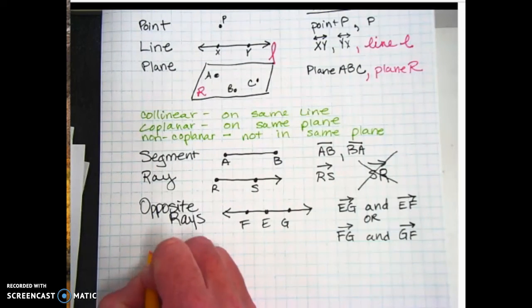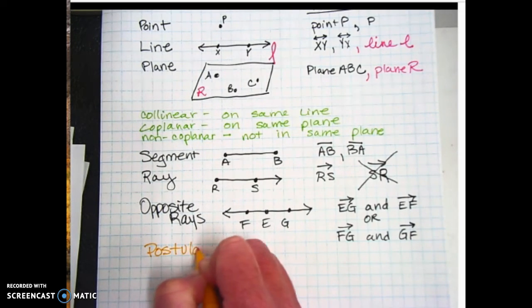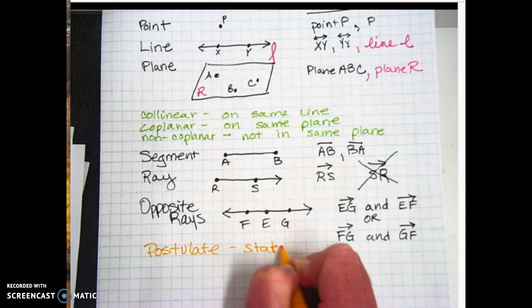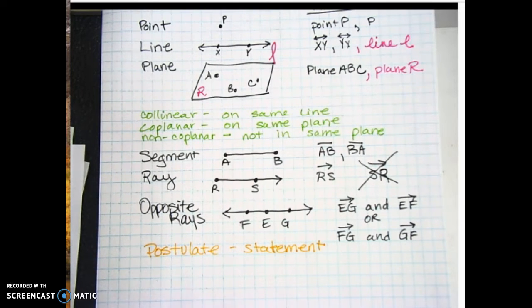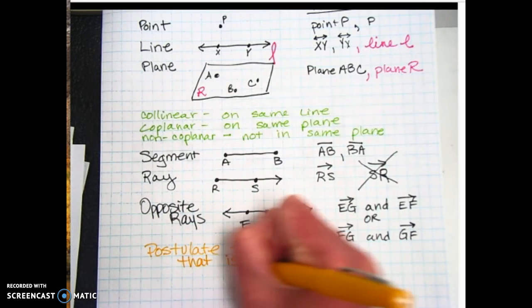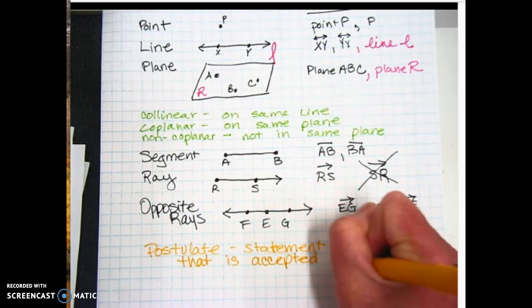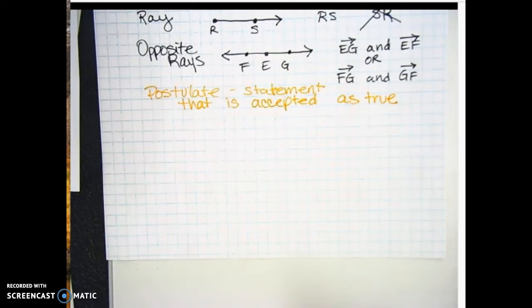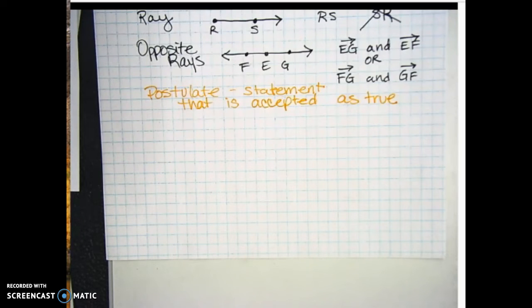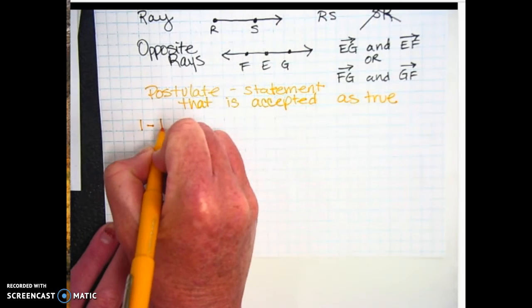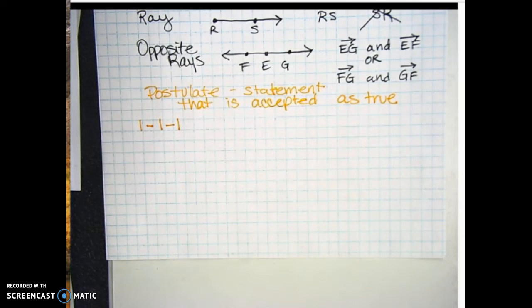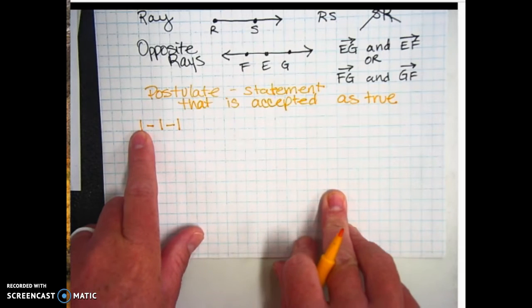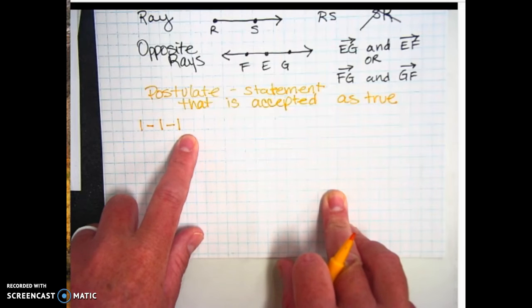Alright? The next word we're going to talk about is postulate. Postulate is basically a statement. It's a statement that is accepted as true. I'm about to read you some postulates. I'm about to tell you their statements. And when you hear them, you're going to go, oh, yeah, that makes sense. It's pretty true. And you'll start to understand what a postulate is. So they're each going to have numbers. The first one has number one dash one dash one. What that means is it's chapter one, section one, the first postulate. So it's the first one in the whole book.